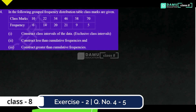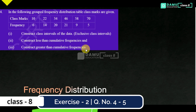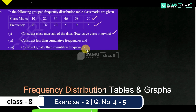Hello viewers. In this module we want to discuss the fourth question. In the following group frequency distribution table, class marks are given — so this time not class intervals, but class marks and frequency are given. We need to construct class intervals of the data, exclusive class intervals where lower limits equal upper limits, then construct less-than cumulative frequencies and greater-than cumulative frequencies.